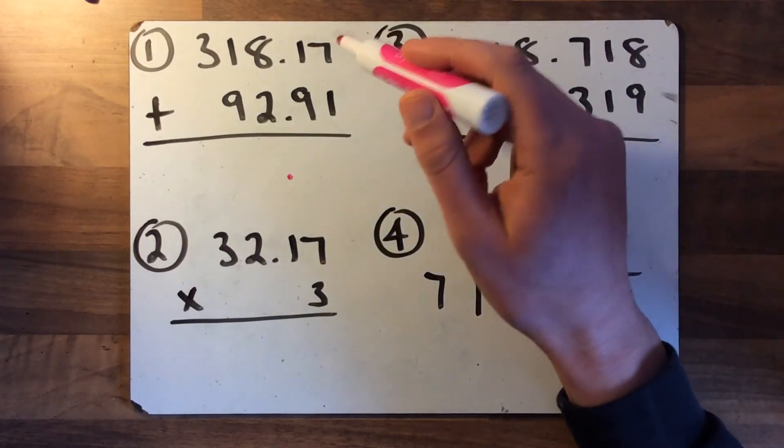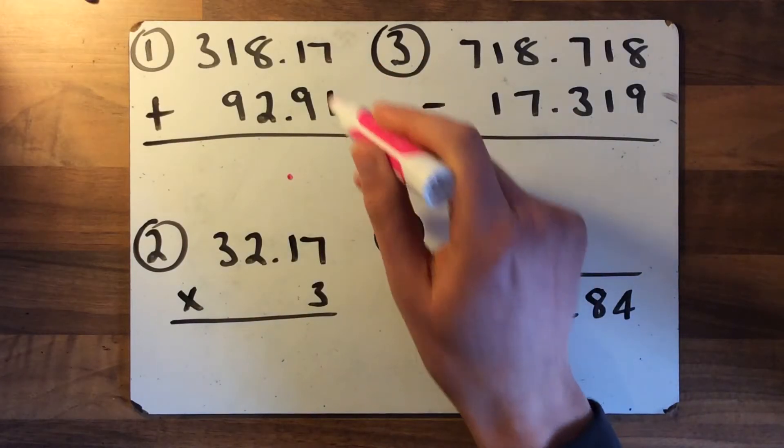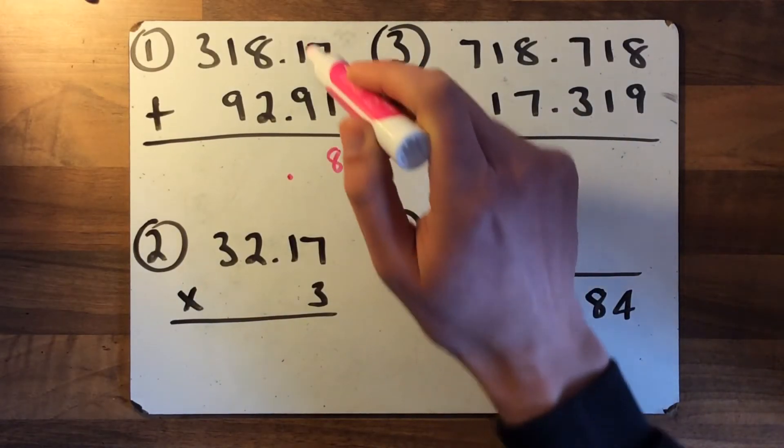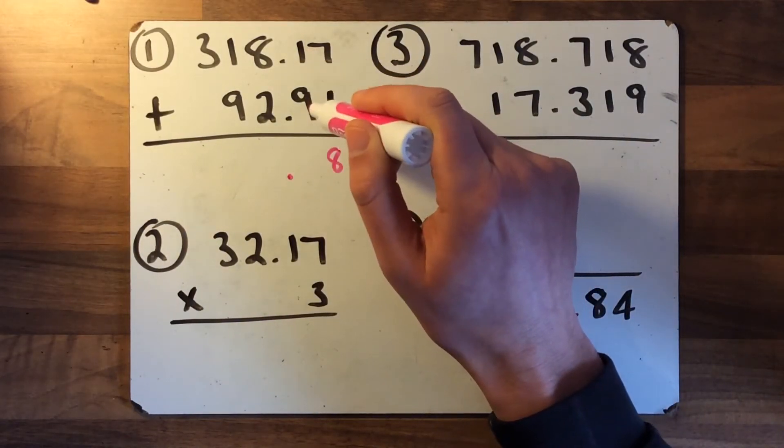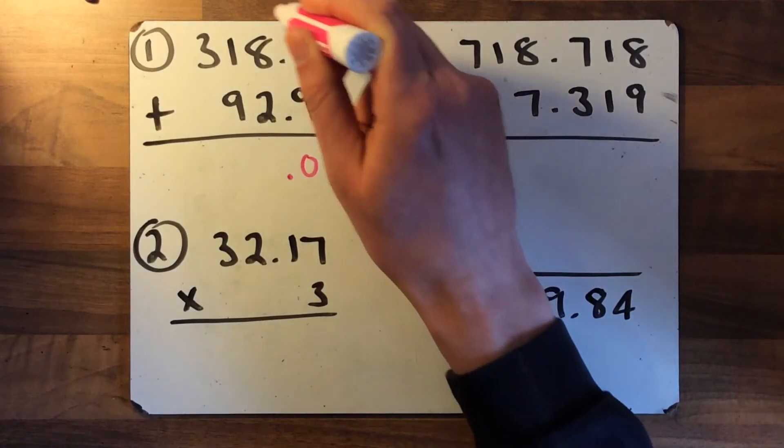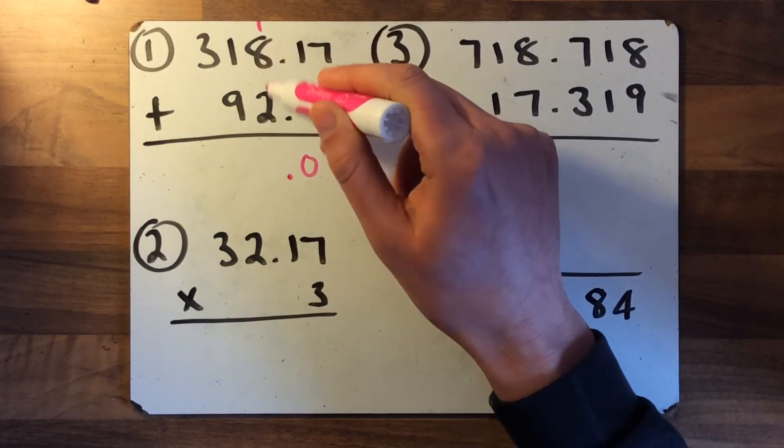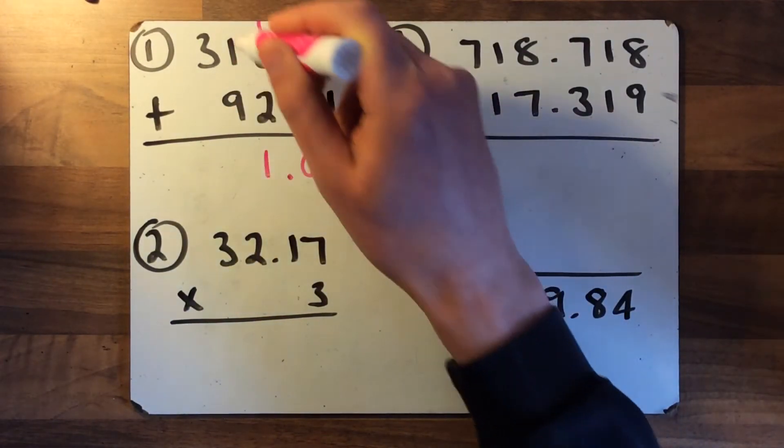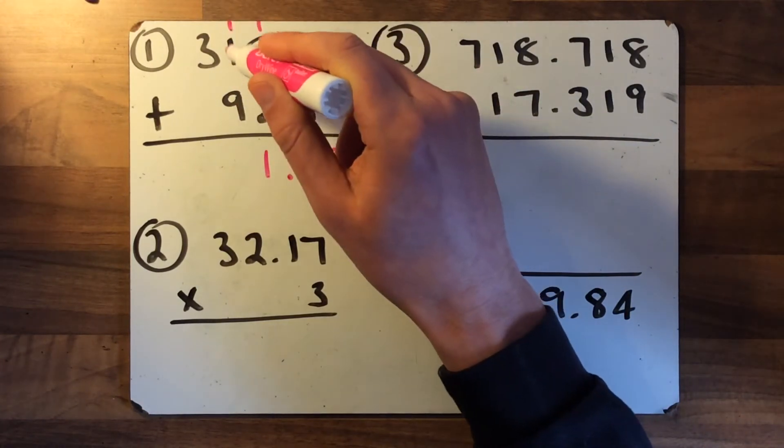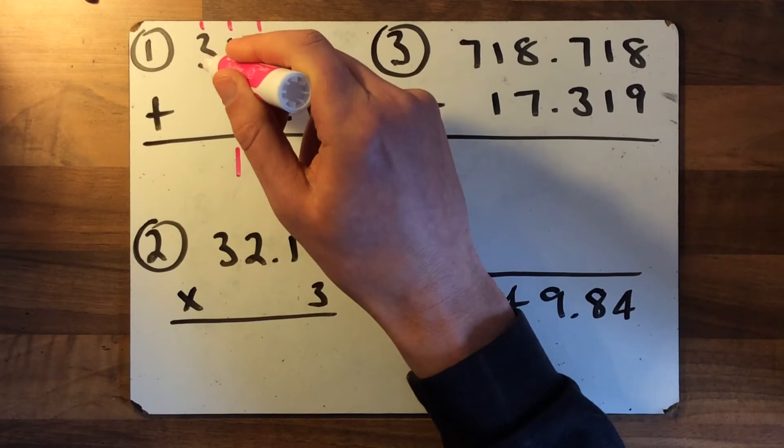So first of all we're adding seven hundredths add one hundredth—seven add one is eight. And then we're adding nine add one—nine tenths and one tenth takes us to ten, doesn't it? So we write the zero here and the one gets carried over into the ones column. Eight add two add one is eleven,